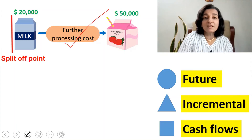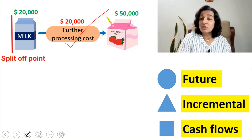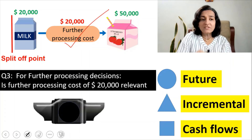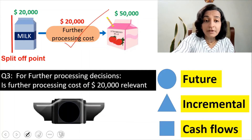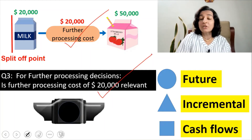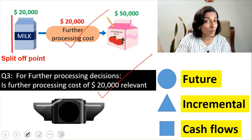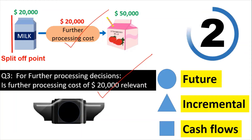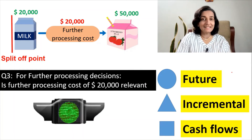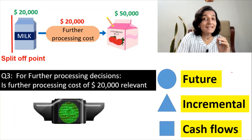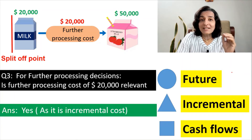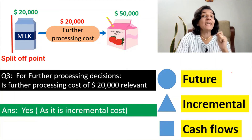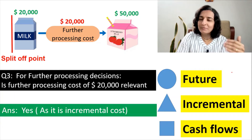If the further processing cost amounts to $20,000, then for further processing decisions, is the further processing cost of $20,000 relevant? It's the green light. Yes — it should be included as it is an additional expense, or an incremental cost.